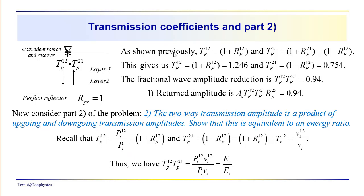The transmission coefficients: T sub P12 going down equals one plus R sub P12, which gives us 1.246. T sub P21 going up equals one minus R sub P12, which equals 0.754. So the fractional wave amplitude reduction is T sub P12 times T sub P21, and that product gives us 0.094.